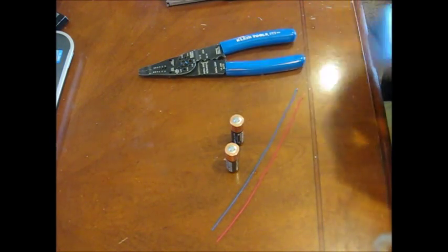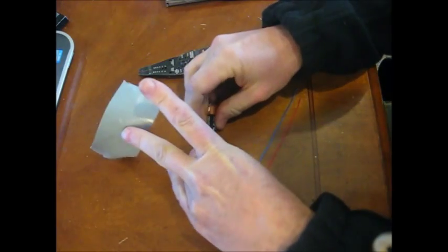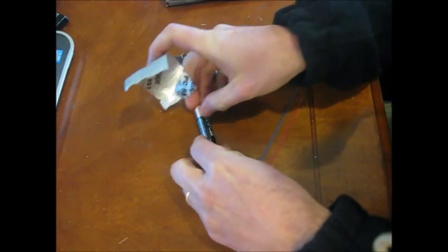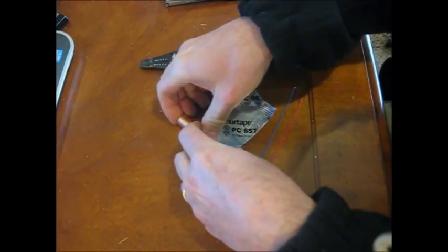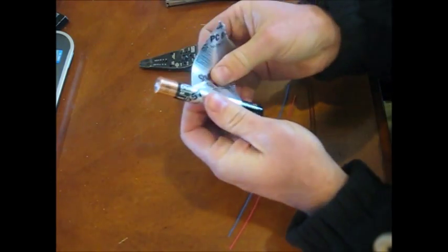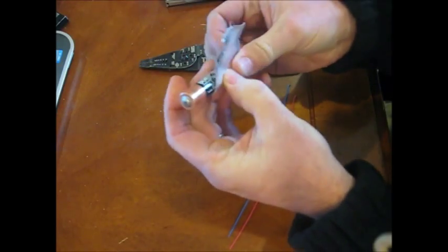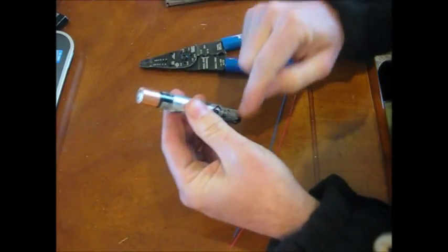So first I'm just going to take a piece of duct tape here and tape the two batteries end to end, like so, and get them real close and tight. I'm just going to take them and tape them together. So now I have three volts of potential from this end to this end.